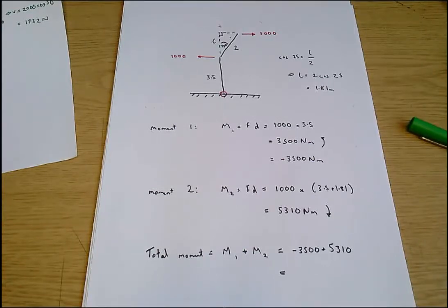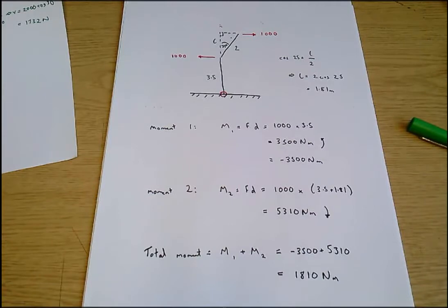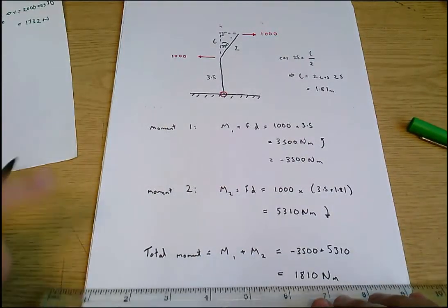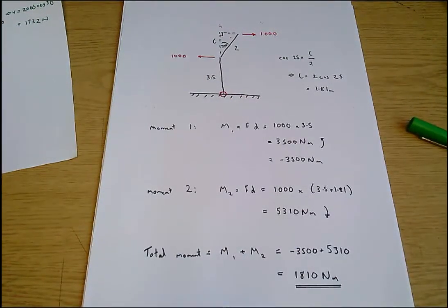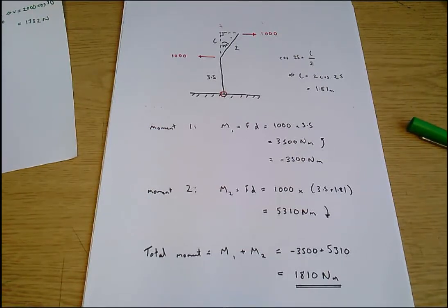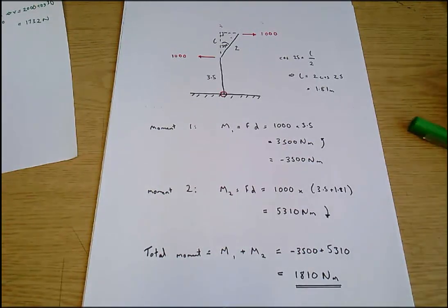The total moment equals the sum of all moments acting: minus 3500 plus 5310, which equals 1810 newton meters — positive, so clockwise. That is the total moment acting in a clockwise direction about pivot O in question six, and that completes the tutorial sheet. Do take the chance to make sure you're totally happy calculating these kinds of moment problems — it'll definitely benefit you throughout your career as an engineer. Good luck.